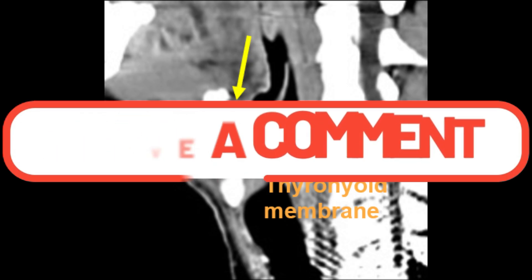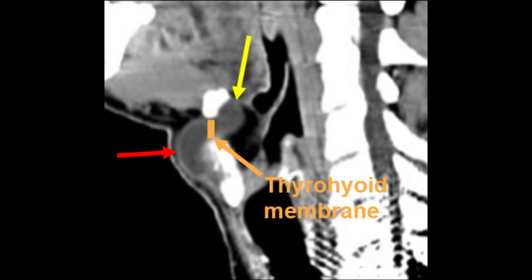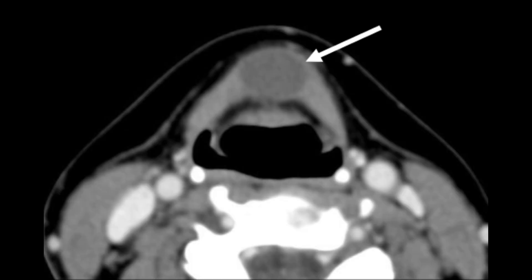The diagnosis in this case is a thyroglossal duct cyst with extension into the preepiglottic space. Let's review some key facts about thyroglossal duct cysts. These are embryological remnants of the thyroglossal tract and are the most common congenital midline neck masses. On imaging, they typically appear as well-defined cystic lesions along the midline.